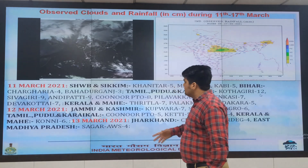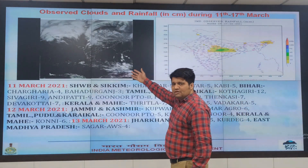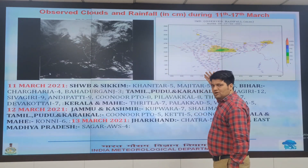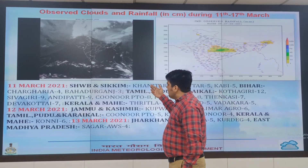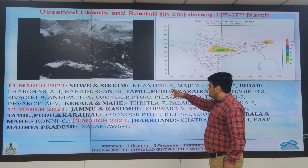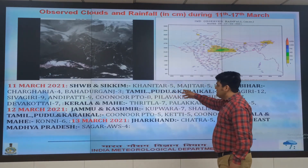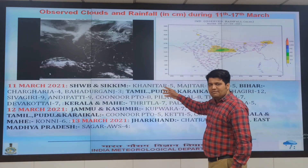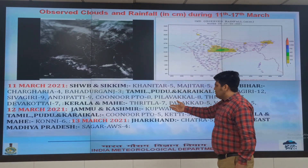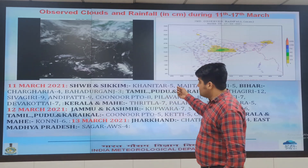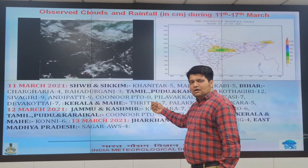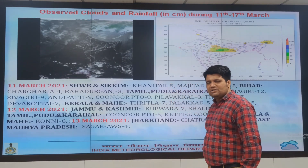Now we look at the weather observed. This is the weekly animation of cloud movement from 11th to 17th March, and this is the observed rainfall product from IMD GFS model. On 11th March, over the sub-Himalayan West Bengal and Sikkim, up to 5 cm rainfall was observed. Over Tamil Nadu and Kerala, heavy rainfall was also observed due to active easterly wave speed convergence. On 12th March, heavy rainfall and heavy snowfall was observed over higher reaches of Jammu and Kashmir. On 13th March, there were active weather conditions over East India and adjoining parts of East Madhya Pradesh.